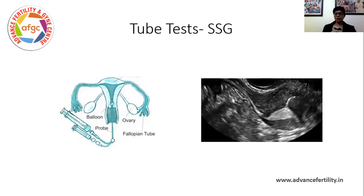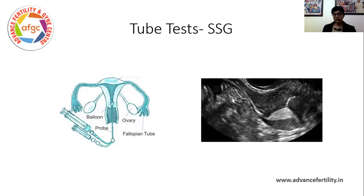The other test, which can be done when you don't have an X-ray machine — for which the HSG is needed — but you have an ultrasound machine, is to push a similar dye through the uterus and look at it through the ultrasound to see whether the dye is coming out or not. It's called a hysterocontrast sonosalpingography, also known as HyCoSy, sonosalpingography, or saline salpingography where you just use saline and not a contrast medium.